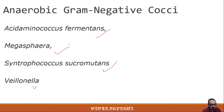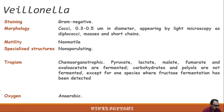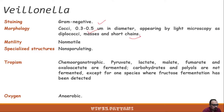I have taken one bacterium from this group: Veillonella. They are gram-negative cocci with a size range from 0.3 to 0.5 micrometers in diameter, and appear by light microscopy as diplococci occurring in chains, short chains, and specialized structures. They are non-spore-forming.